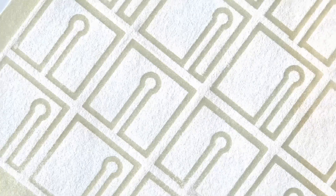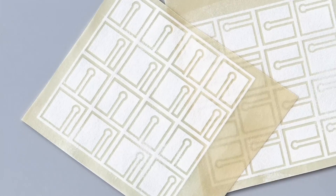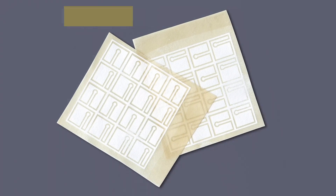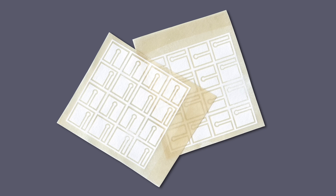Here's an image where I added background color. Now I'm not changing the important information in the image — the structure. The structure is the data. I'm just adding an additional component to allow the viewer to see the material better. We'll be looking at adding backgrounds in the how-to-do-it section.